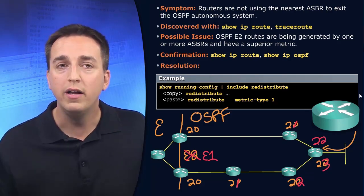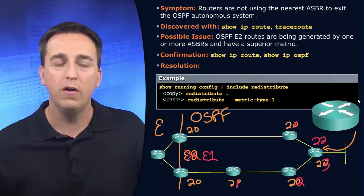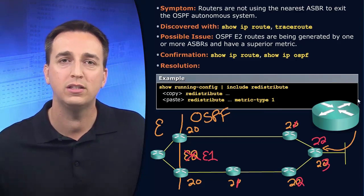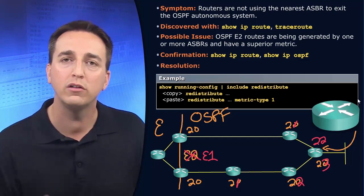Use E1 if you want to make sure that all of the costs are cumulative from that redistribution point right up through every single router in your autonomous system to make sure that you have hyper accurate values when your routers are making decisions.